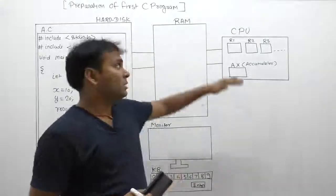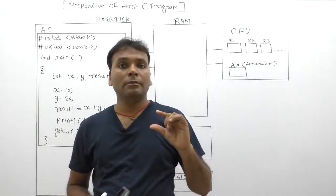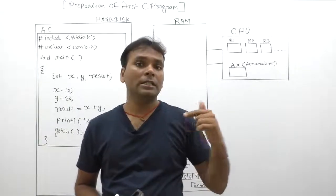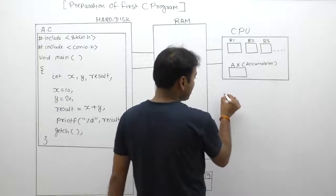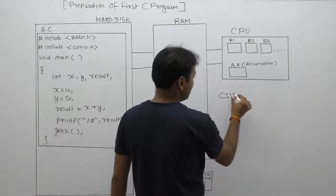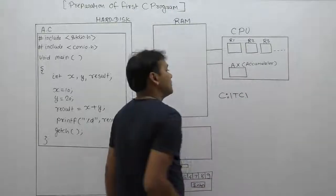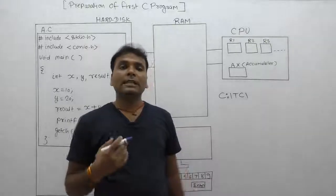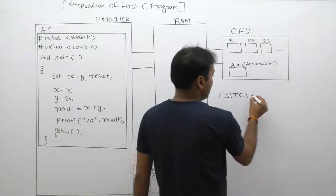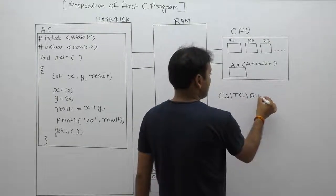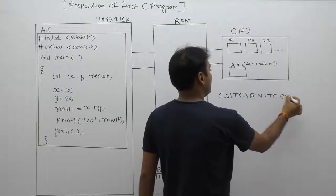Before describing that diagram example, let's see how to create the first C program from initial steps. As described in the previous video, we installed Turbo C software inside the C drive, inside the TC folder. For creating a C source code, we need a C editor software, which is available inside the TC folder, then inside the bin folder, as a file called tc.exe.